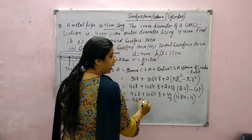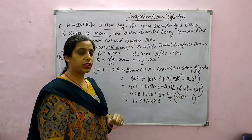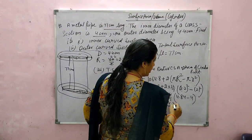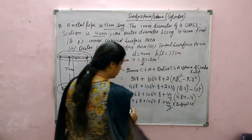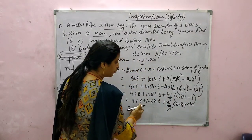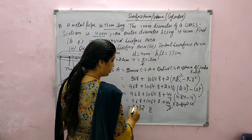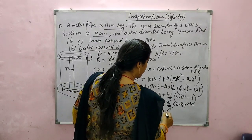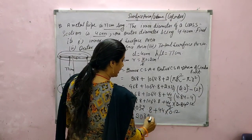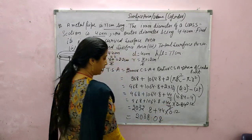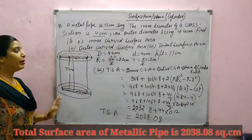This gives 968 plus 1064.8 plus 44 by 7 into (4.84 minus 4), which equals 968 plus 1064.8 plus 44 by 7 into 0.84. Simplifying: 44 by 7 into 0.84 gives 5.28. After adding all values, total surface area equals 2038.08 cm square. This is the total surface area of the whole metal pipe.